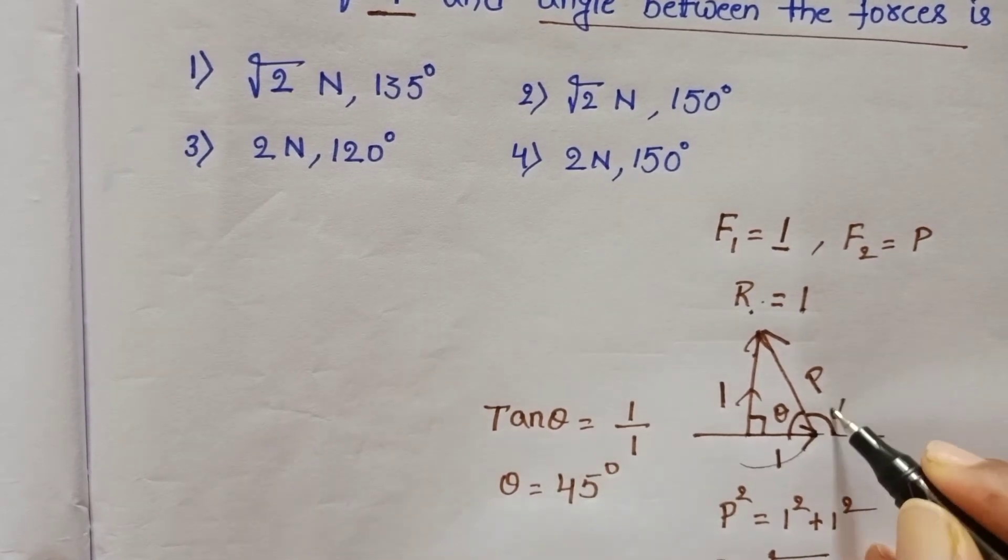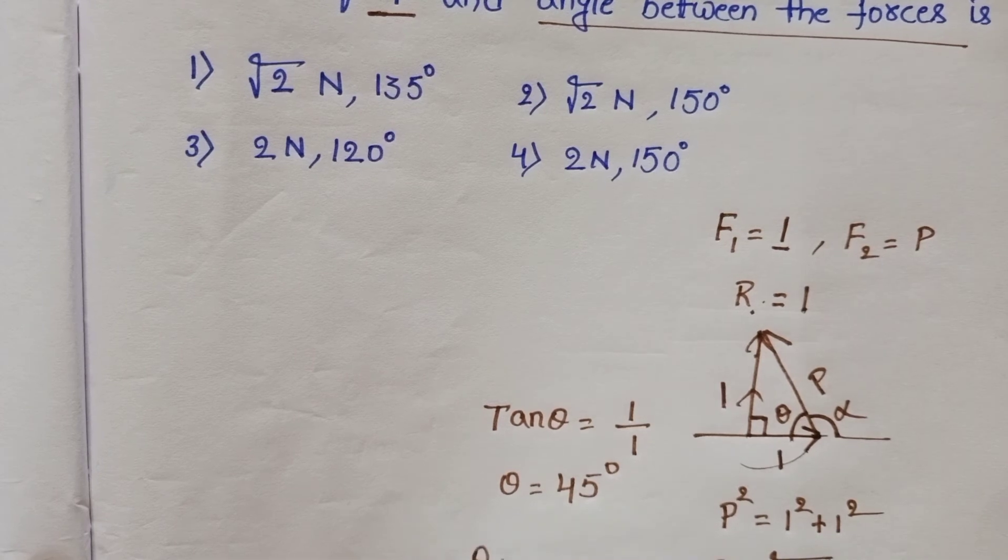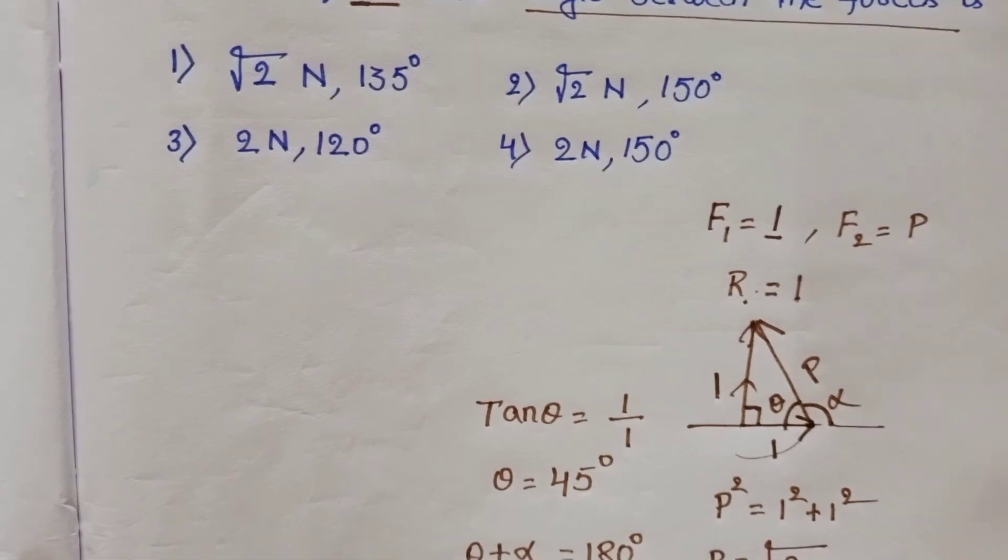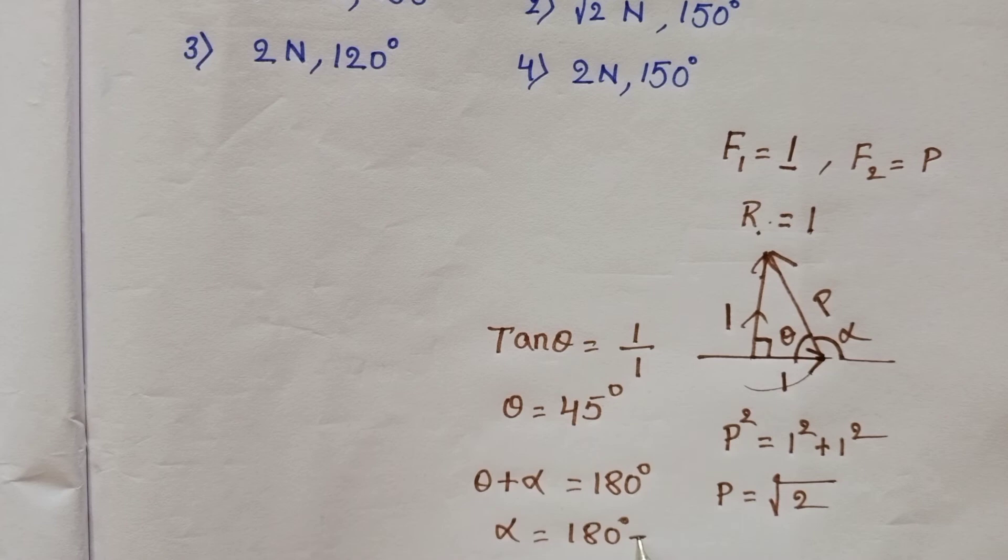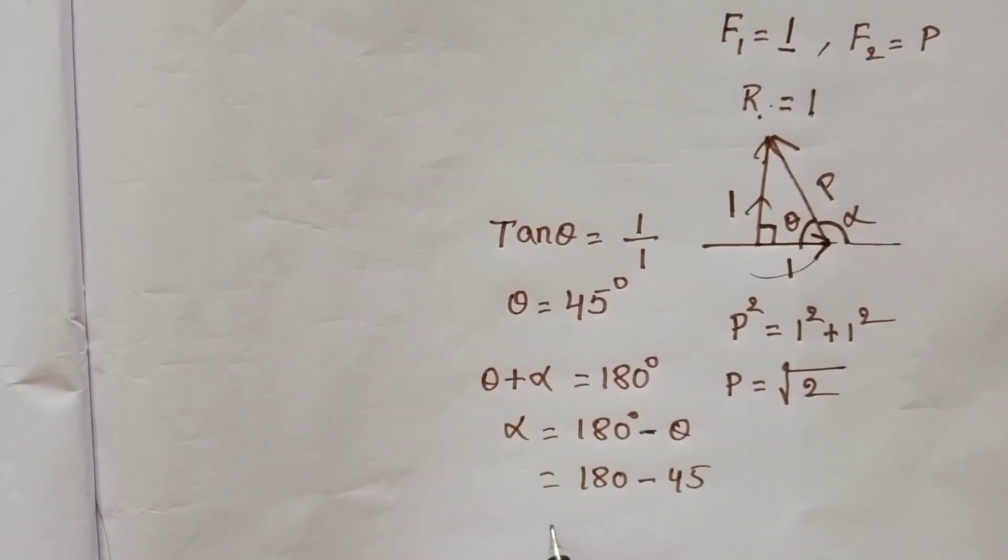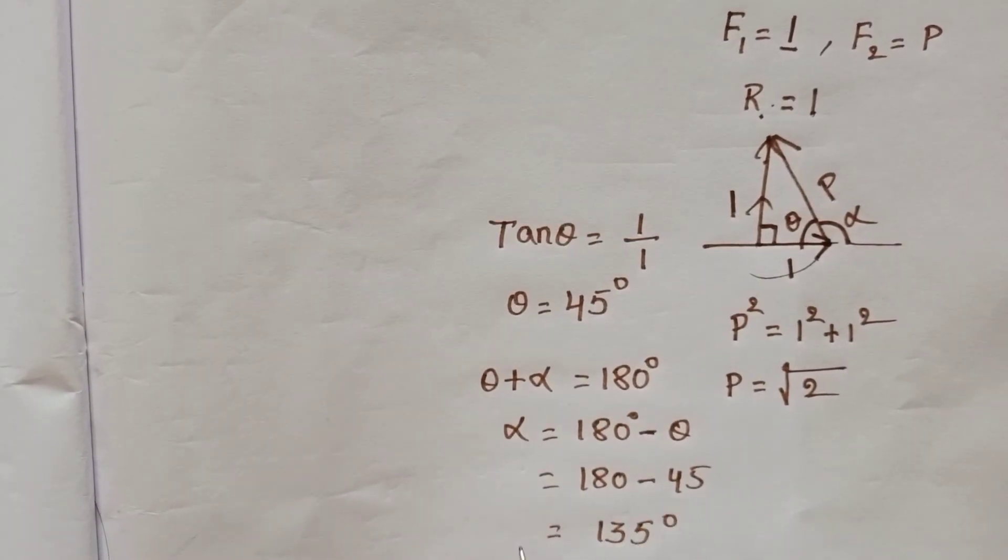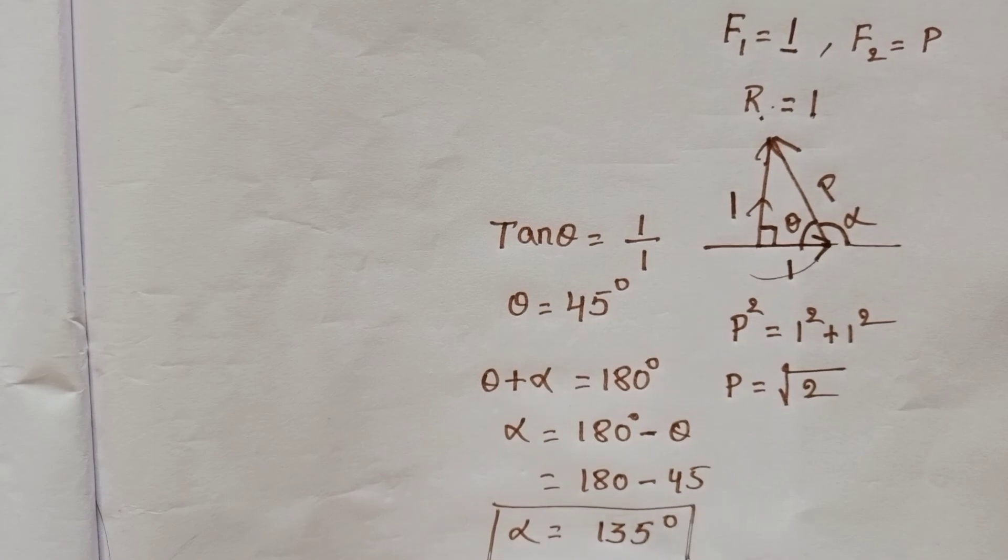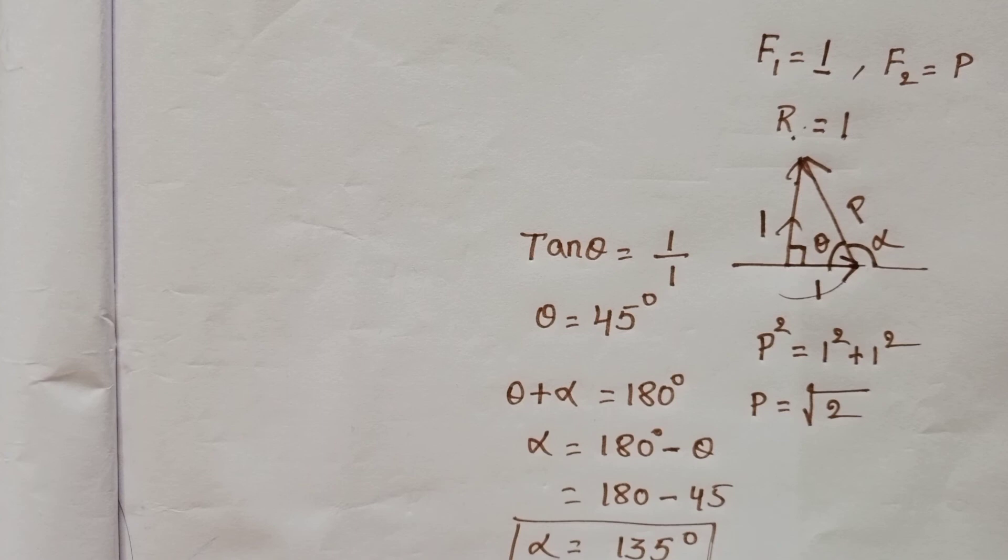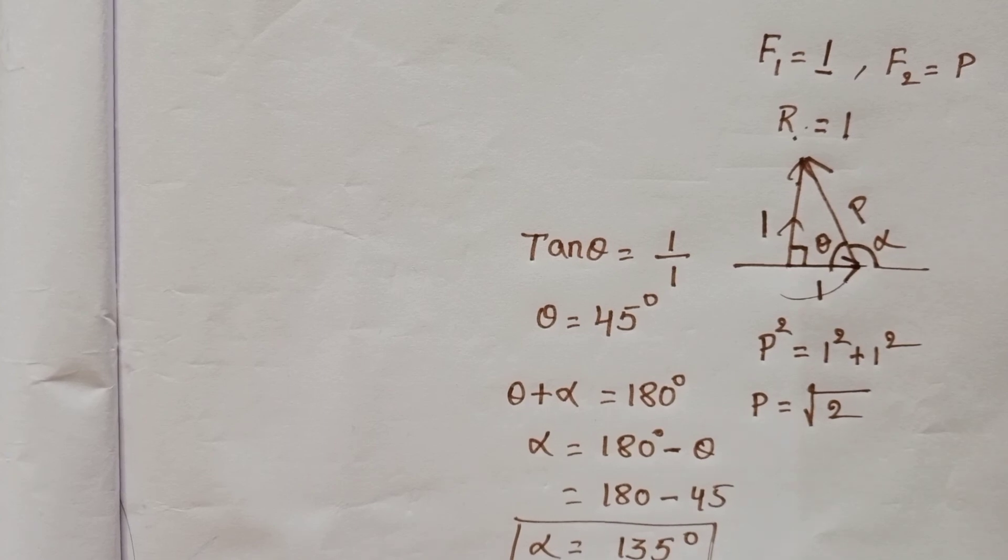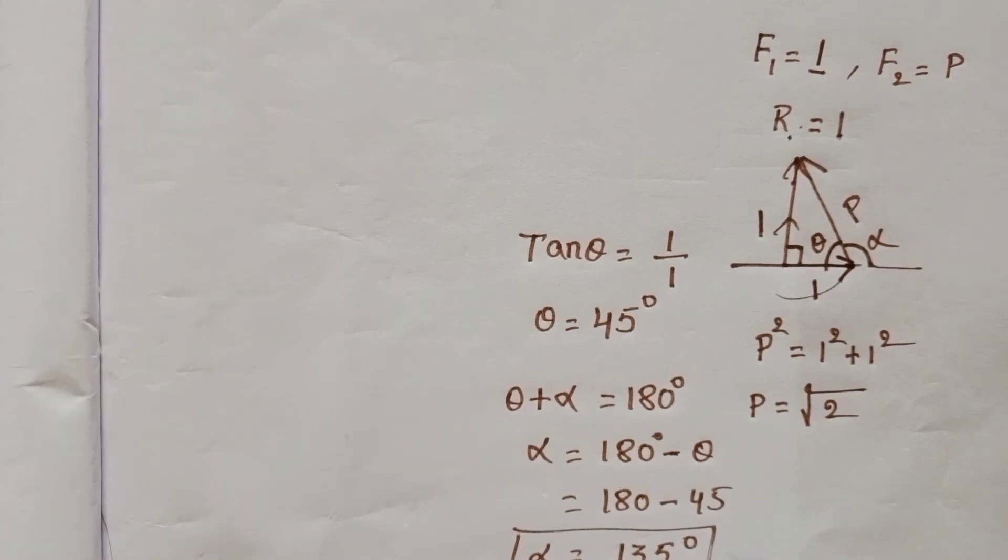And now let it be alpha. Theta plus alpha is equals to 180 degrees. Then alpha is equals to 180 minus theta, 180 minus 45, that is equals to 135 degrees. P value is root 2 and angle between the given two vectors is equals to 135 degrees.